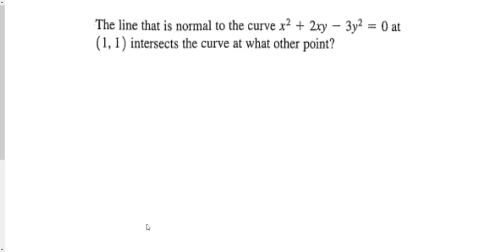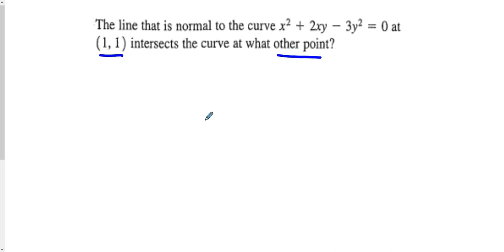What we're going to do is work through a problem where we're finding an intersection of a normal line to this curve. We know one of the intersections is (1, 1), and we want to find what is the other point. In order to figure this out, there are many different questions we have to think about.